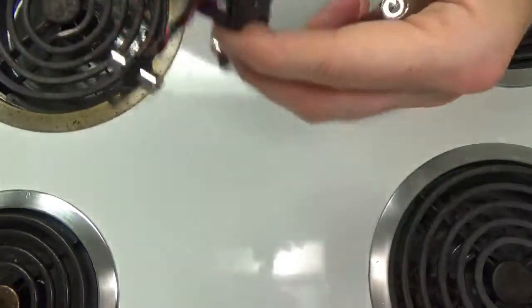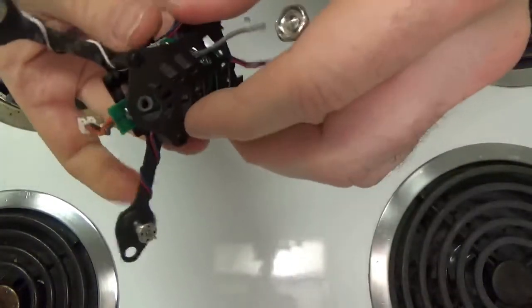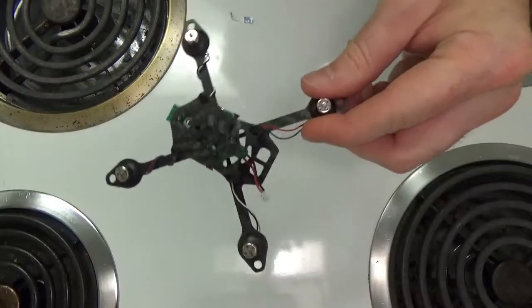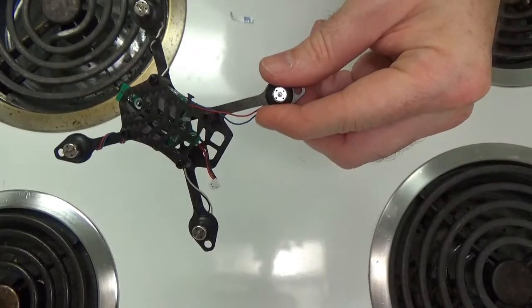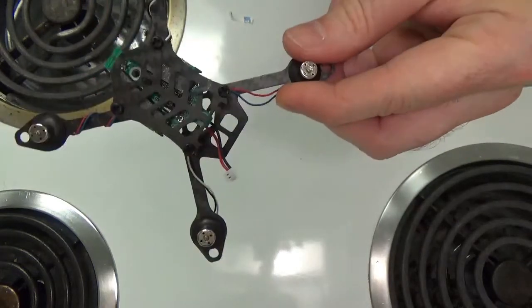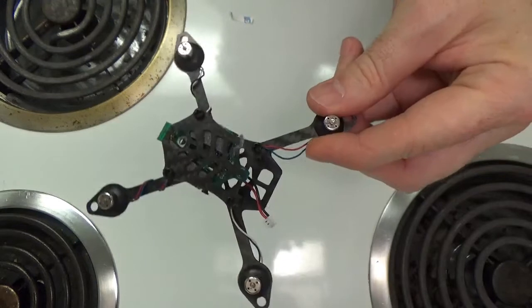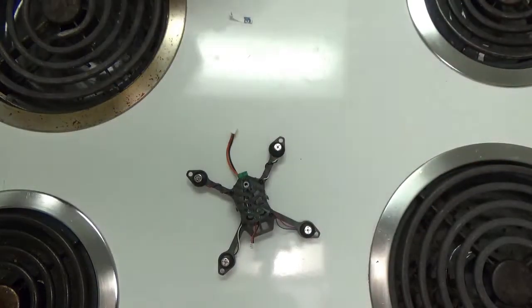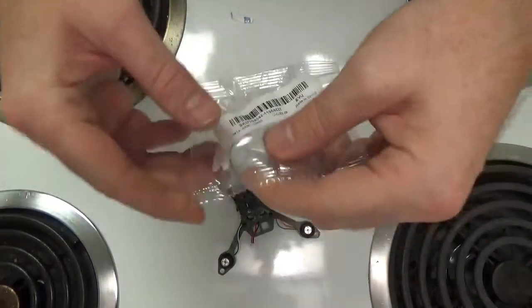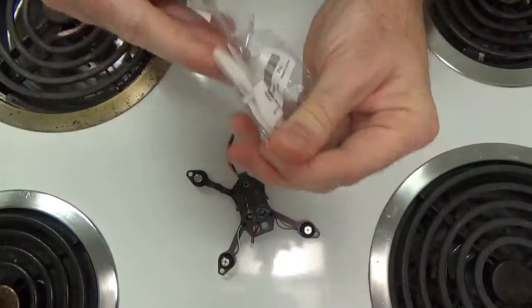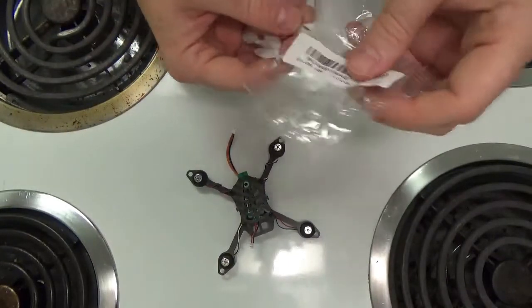Alright, so the flight controller motors are now attached. The next thing to do after getting our frame back together after plugging the motors in is to attach the propellers to the motors. Put this down and these props here. These are glow-in-the-dark props, which is interesting.